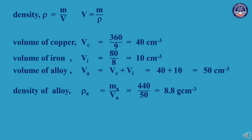The equation gives V equals M divided by rho for each component.